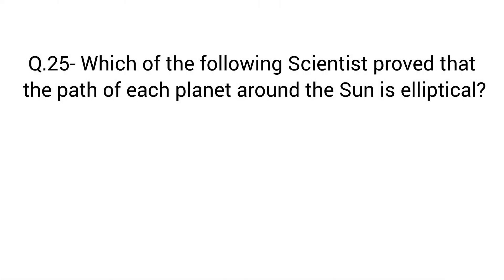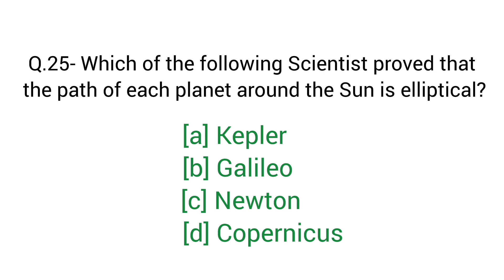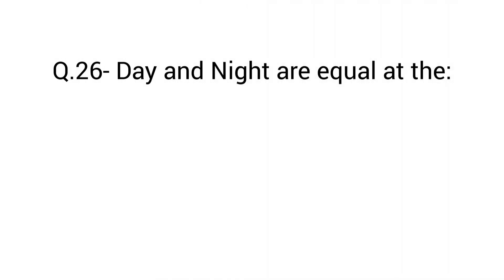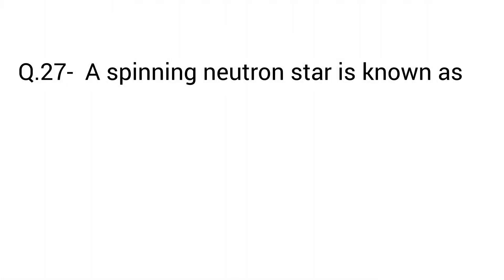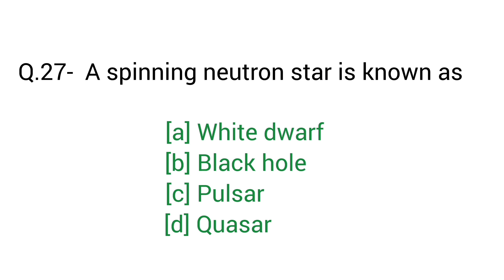Question number 25: Which of the following scientists proved that the path of each planet around the sun is elliptical? Right answer A — Kepler. Question number 26: Day and night are equal at the? Right answer D — Equator. Question number 27: A spinning neutron star is known as? Right answer C — Pulsar.